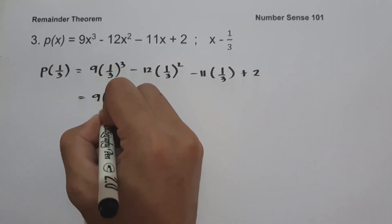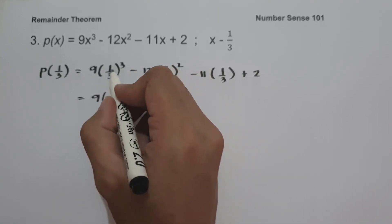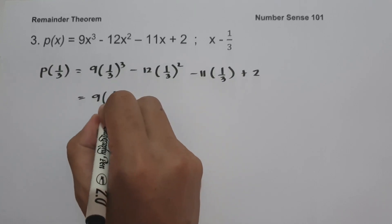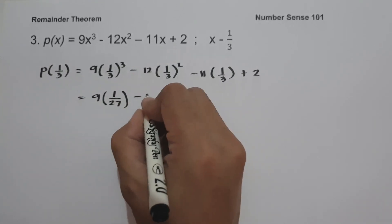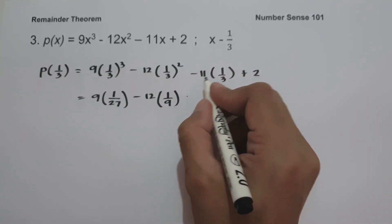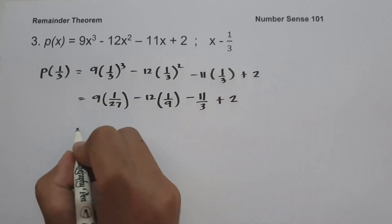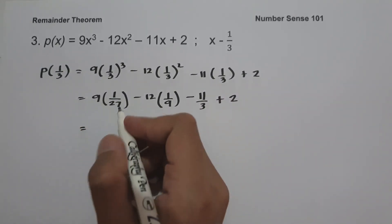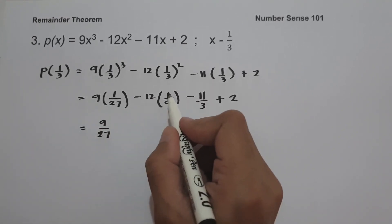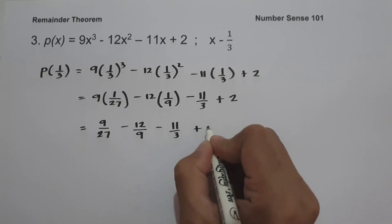Let us rewrite: 1/3 raised to 3 means distributing the exponent on numerator and denominator. 1 raised to 3 is 1, and 3 raised to 3 is 3 times 3 times 3, which gives us 27. Then negative 12 times (1/3) squared: 1/3 squared is 1 over 9. And negative 11 times 1/3 gives us negative 11 over 3, plus 2. So we have 9 over 27, minus 12 over 9, minus 11 over 3, plus 2.